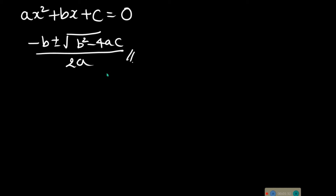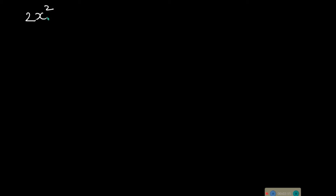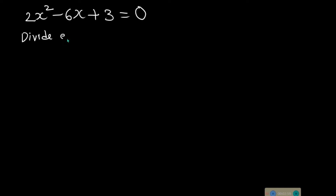First, we'll solve a quadratic equation without any formula, then we'll see how the formula is derived. Let's set a quadratic equation: 2x squared minus 6x plus 3 equals zero. We'll solve this without any formula method.